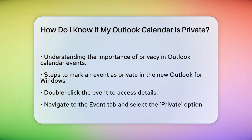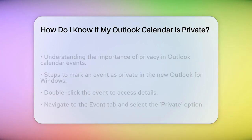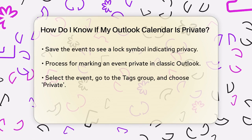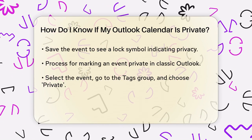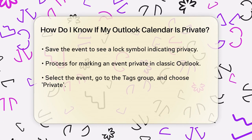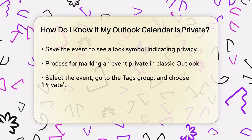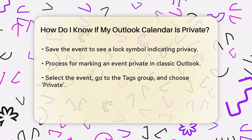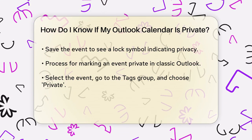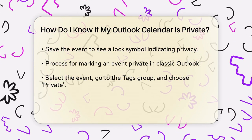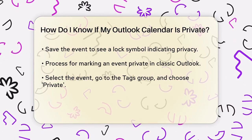In the new Outlook for Windows, you need to double-click on the event you want to make private. Once you're in the event details, go to the Event tab and select the Private option. After you save the event or send the meeting update, a lock symbol will appear on the event in your calendar view. This lock symbol is your visual cue that the event is private.